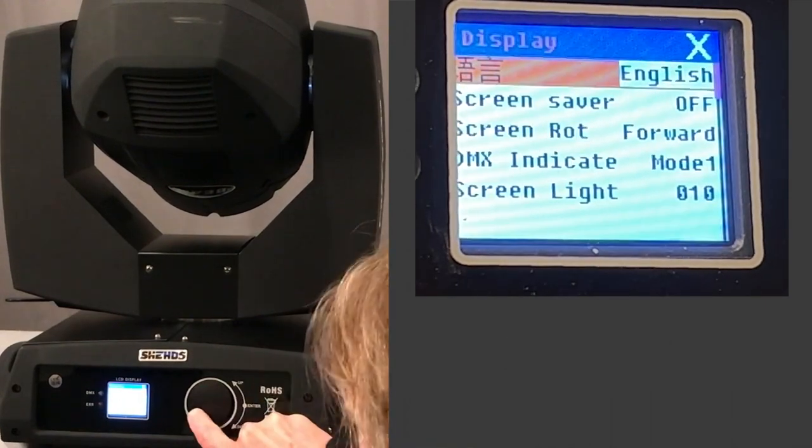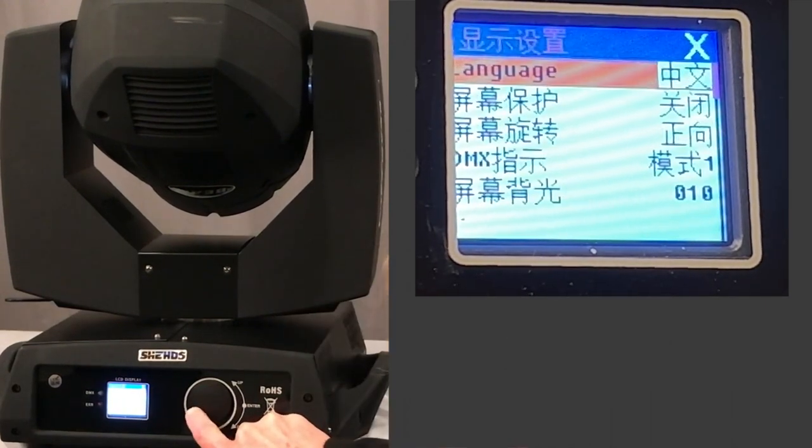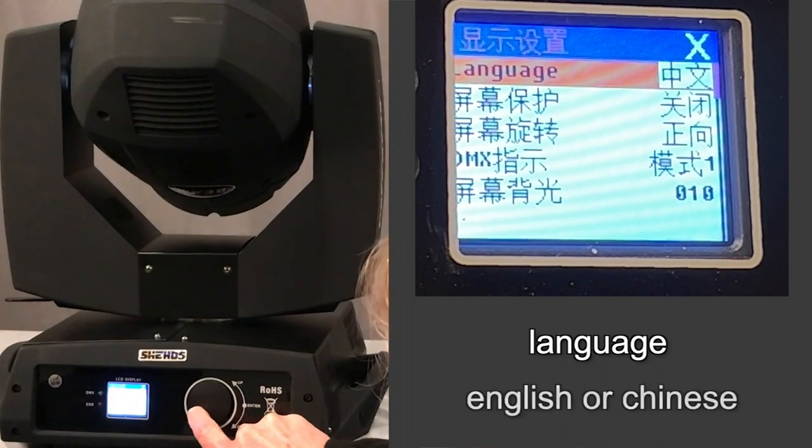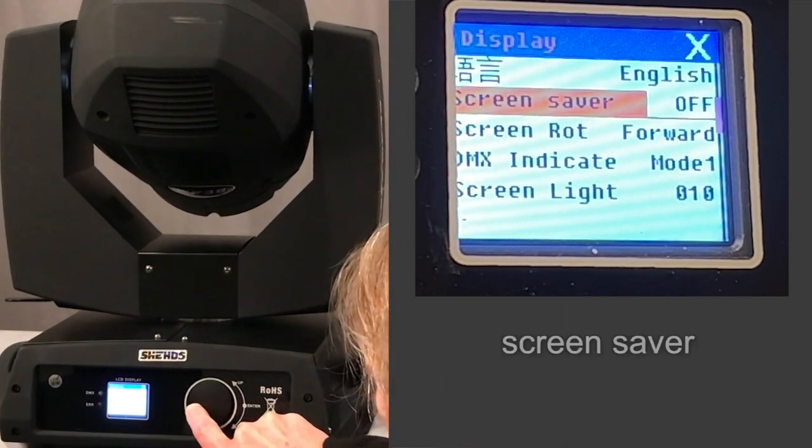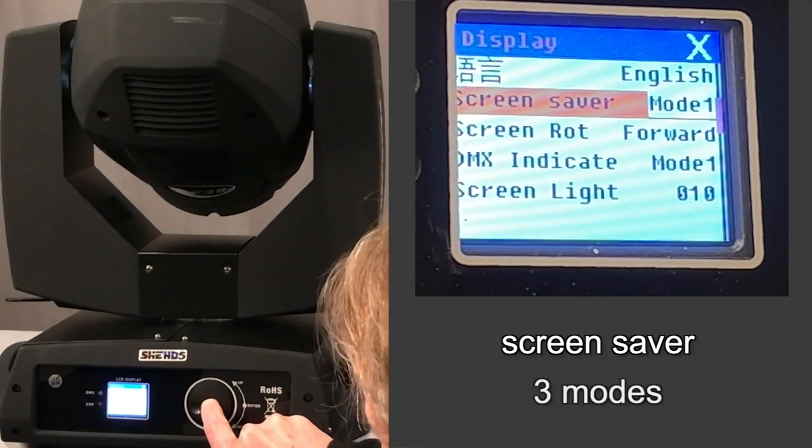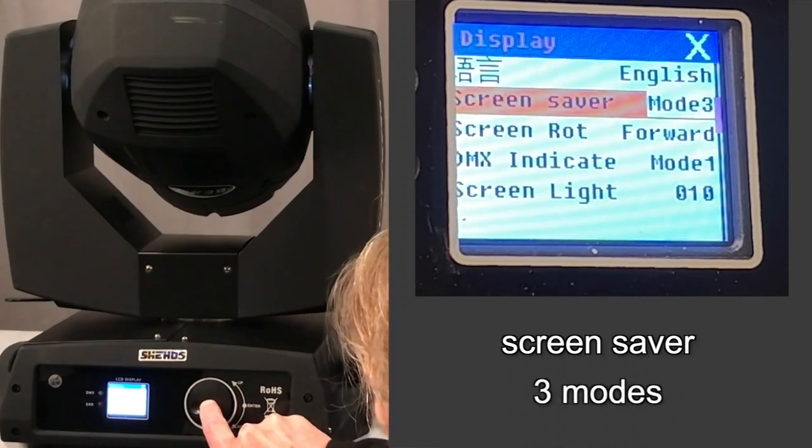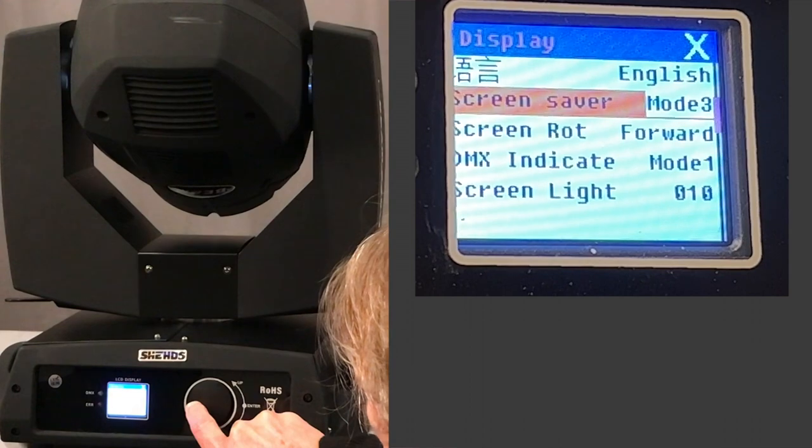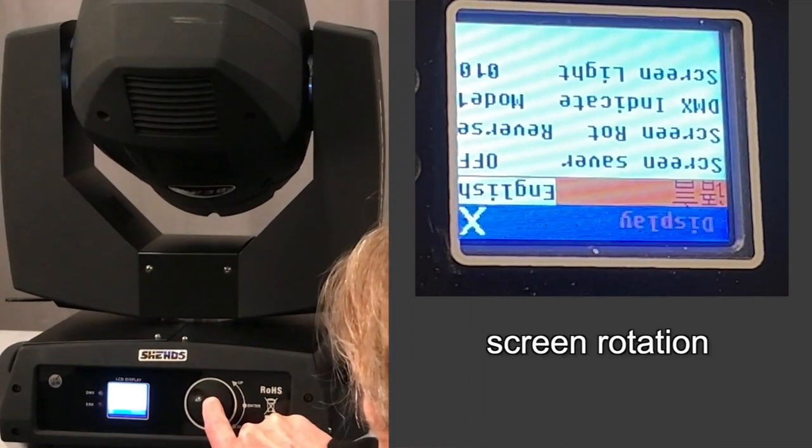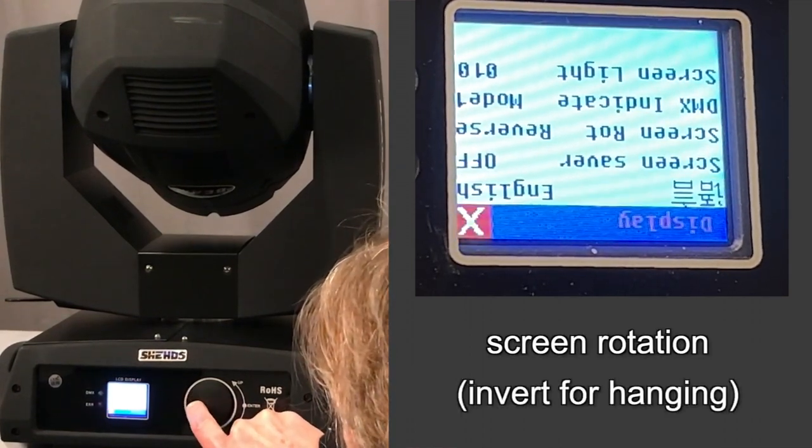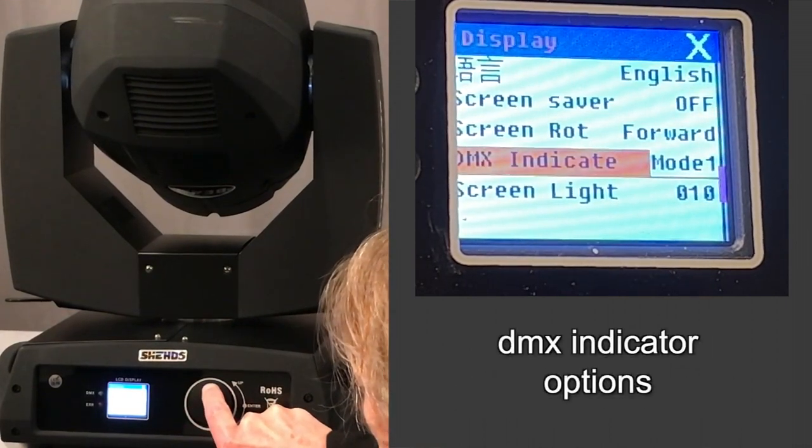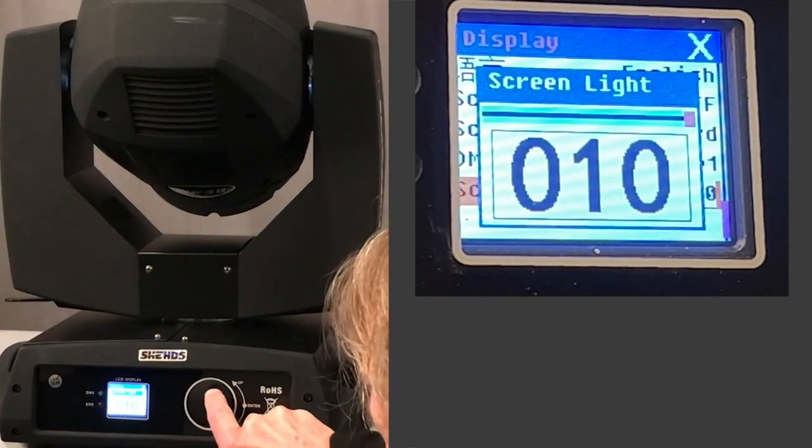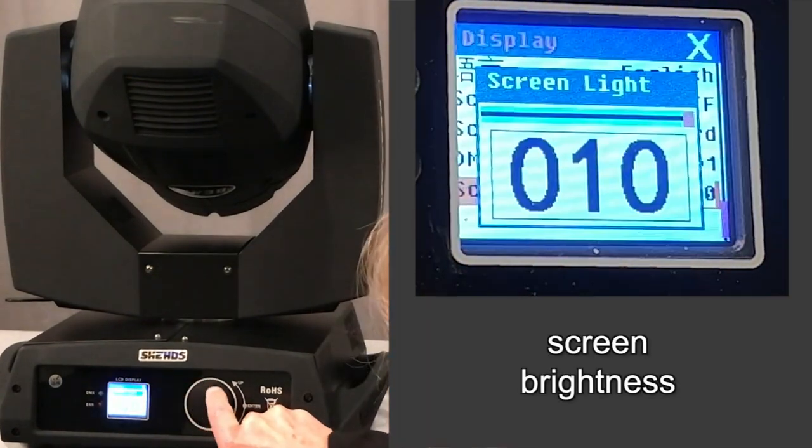On this page, you can change the language from English to Chinese. There's a screen saver that turns the screen off at different time intervals, depending on what mode you're in. Screen rotation allows you to invert the screen. DMX indicator mode. And also in this mode, you can change the brightness of the screen.